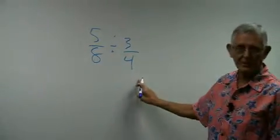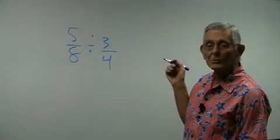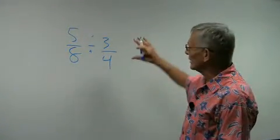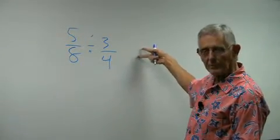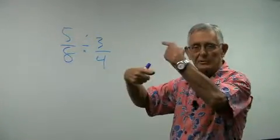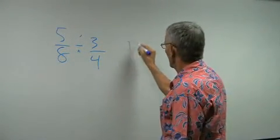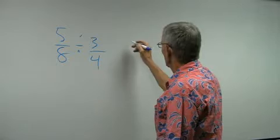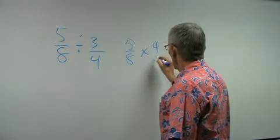what is 5 eighths divided by 3 fourths? Well, I can't divide. What I do is I make it into a division problem by inverting the second fraction, or what we call using its reciprocal. The reciprocal of a fraction is when you turn it upside down. So what I do is this.